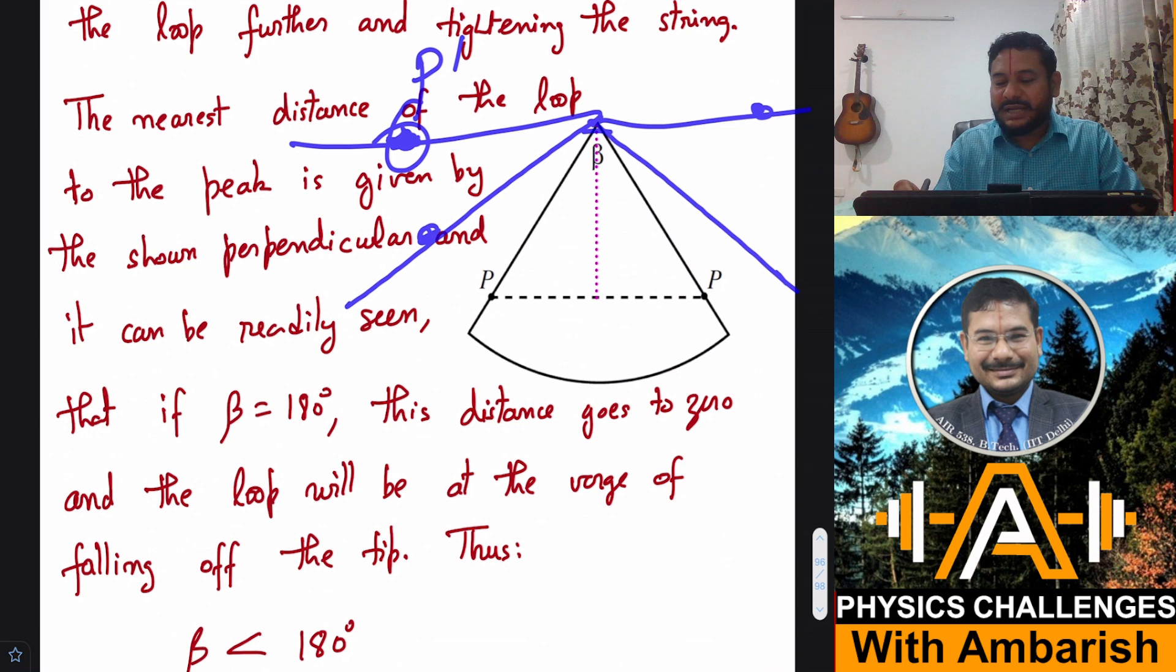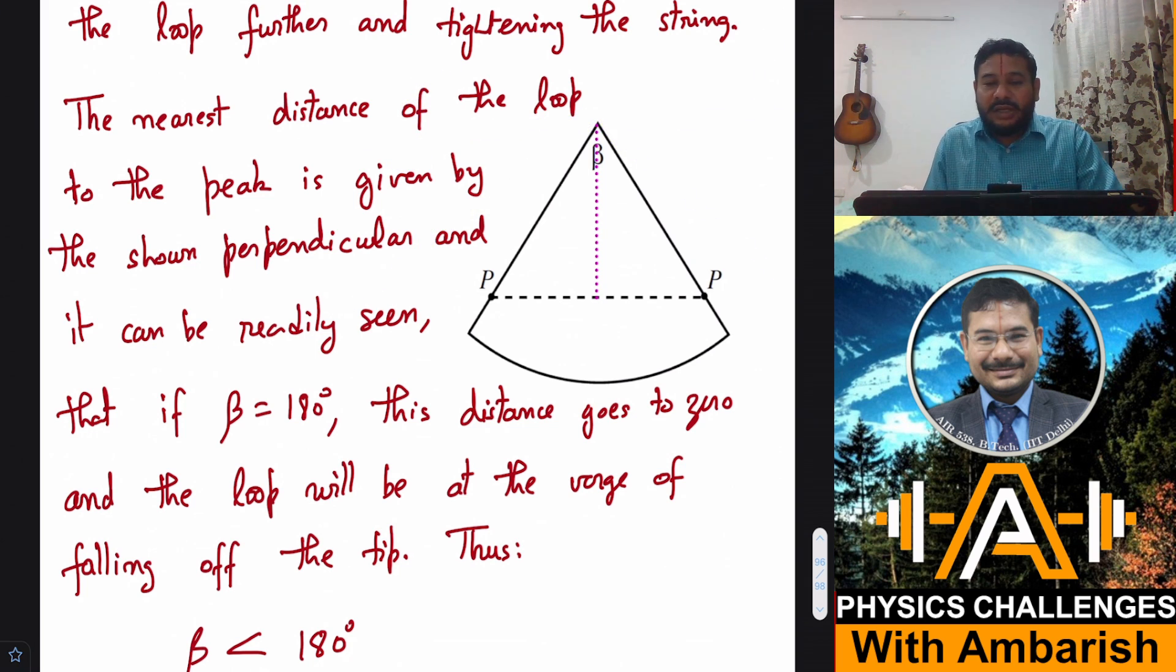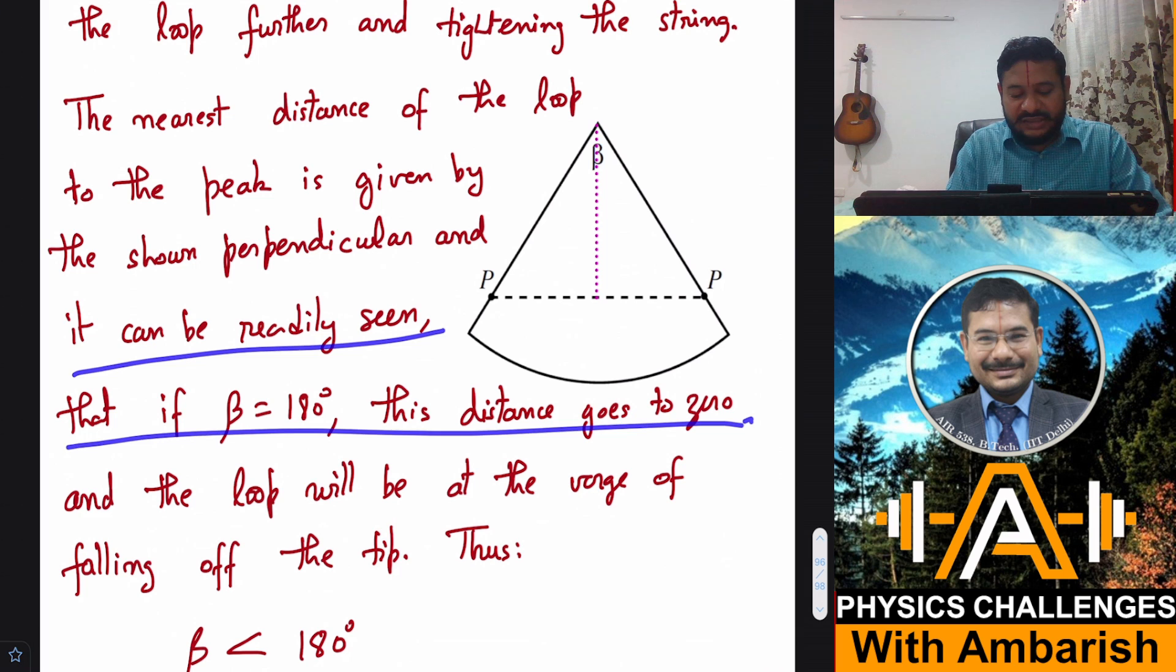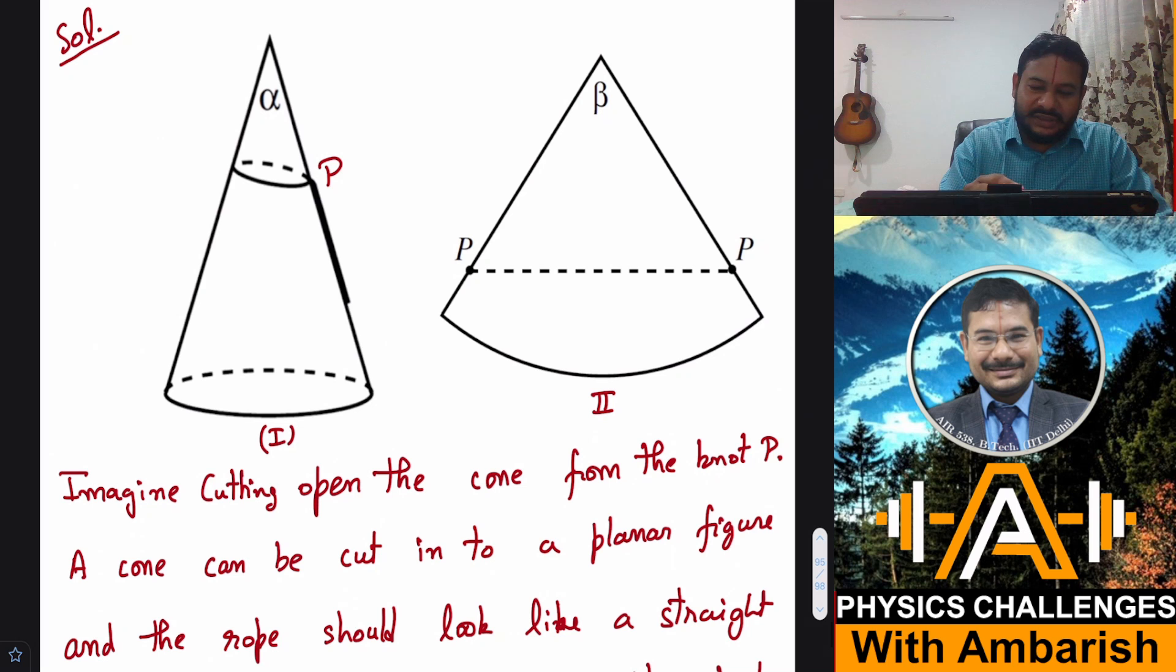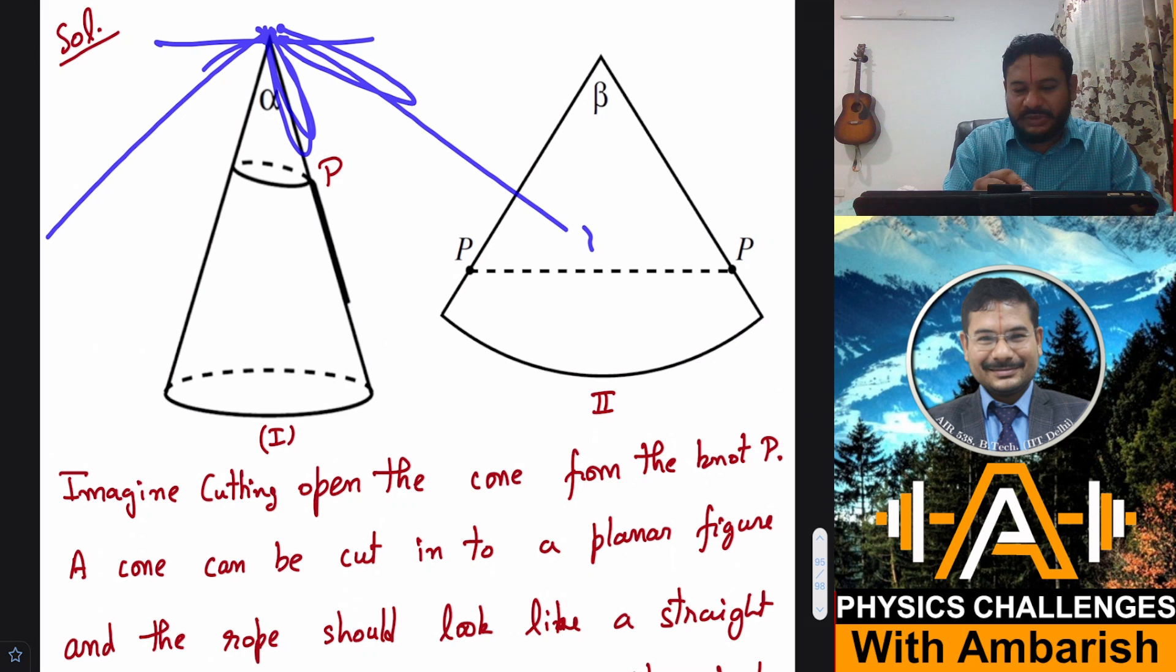So P has to lie on the cut. And this is, let us say, P dash, this is also P dash, then P P dash line will have to pass through the apex of the cone. That is the peak of the cone. So it can be readily seen that if beta becomes 180 degrees, this distance goes to zero and the loop will be at the verge of falling off the tip. So when it becomes 180 degrees, what will happen? This loop will be somewhere like this. I mean, it's not to the scale, but the loop will be somewhat like this and it will be at the verge of sliding down.